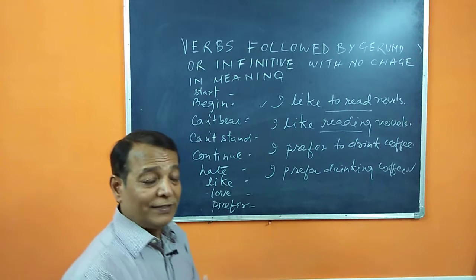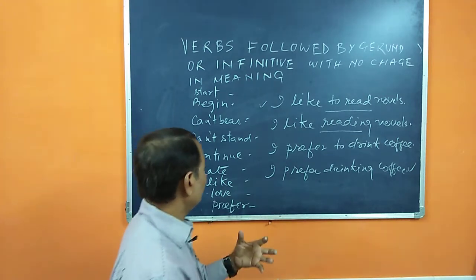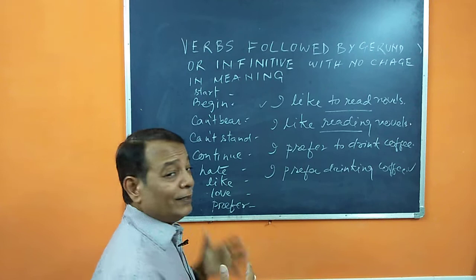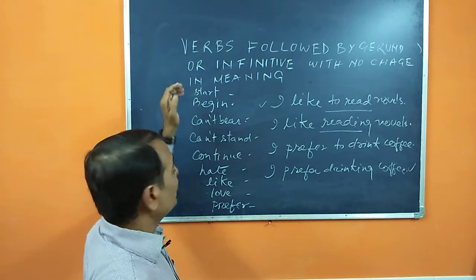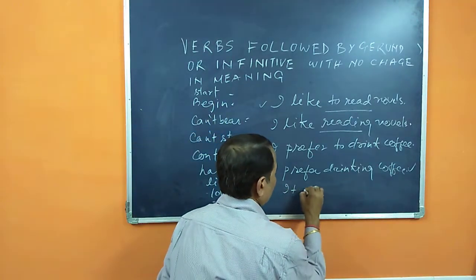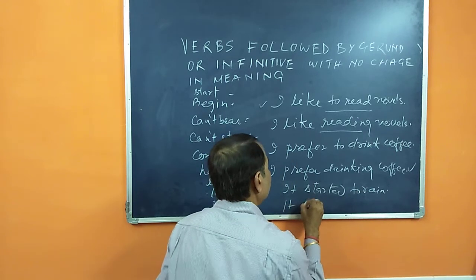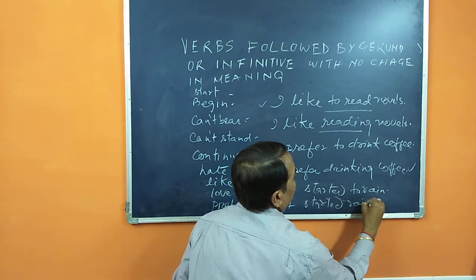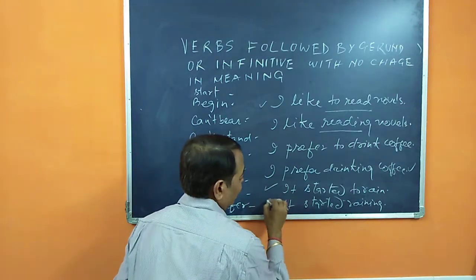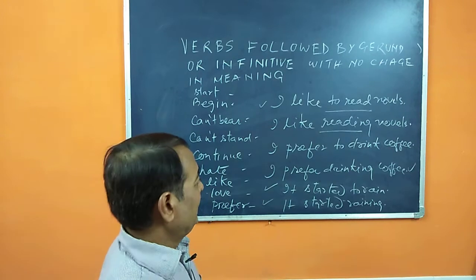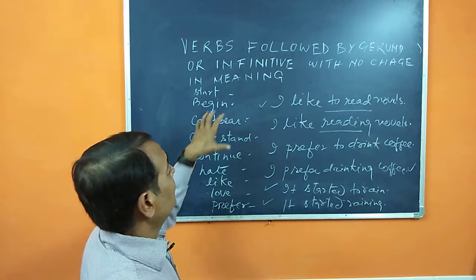With 'continue': he continued to talk, and he continued talking — both are correct. I love to dance and I love dancing — both correct. Similarly, 'it started to rain' and 'it started raining' — both are correct. In my opinion, native speakers in such situations prefer using the gerund because you need fewer words compared to the infinitive.